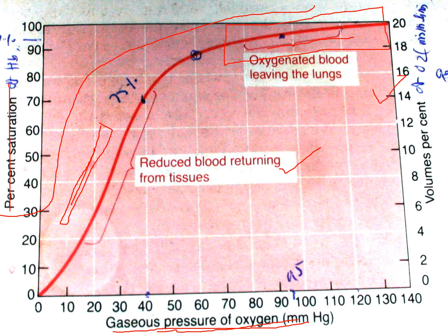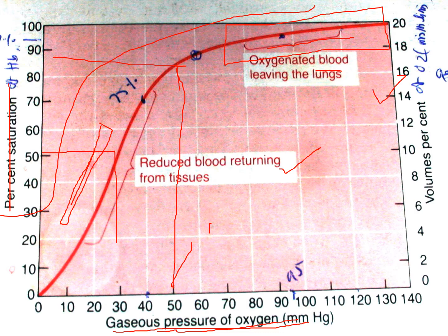P50 is the partial pressure of oxygen at which hemoglobin is 50% saturated with oxygen. When the partial pressure of oxygen is 25 to 27 mm of Hg, hemoglobin is saturated to about 50%. At 40 mm of Hg, saturation is 75%. It becomes 95% when the partial pressure of oxygen is 100 mm of Hg.